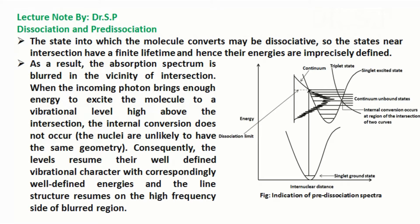The state into which the molecule converts may be dissociative, so the states near intersection have a finite lifetime and hence their energies are imprecisely defined. As a result, the absorption spectrum is blurred in the vicinity of intersection.